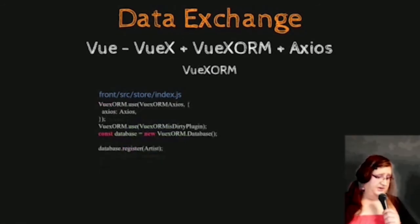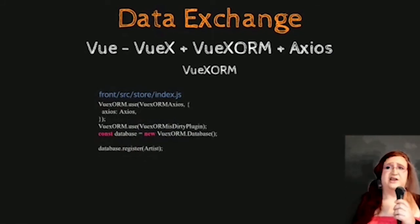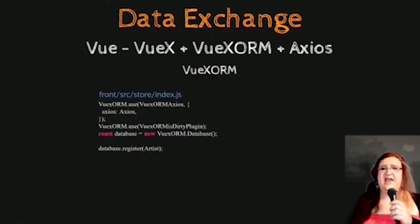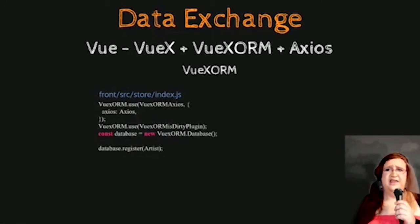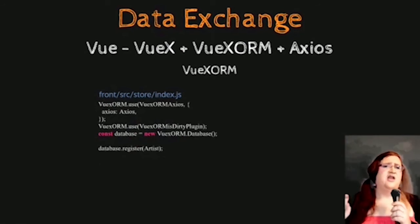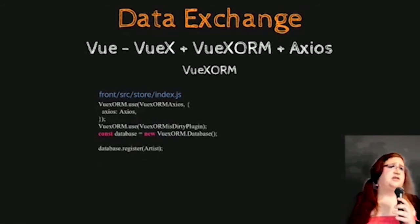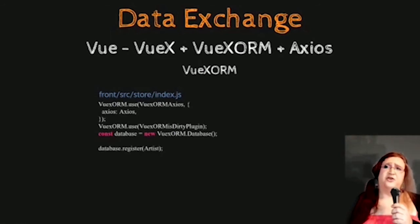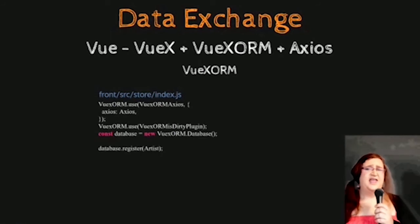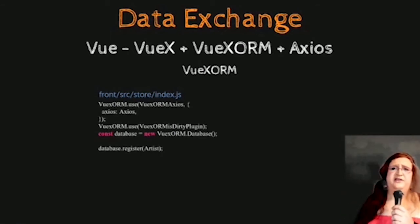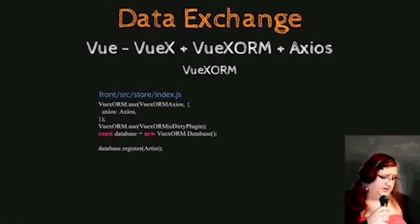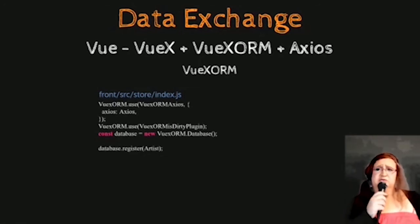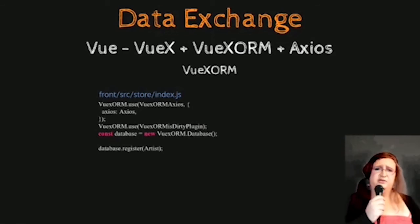Next to Axios, we'll be using Vuex ORM. Vuex ORM is an ORM like Django's ORM, except it stores data inside your browser's in-memory database. Every time you add data from the API, it creates basically a SQL database in memory in your browser. This is really useful — for example, if you've already loaded a bunch of artists and need to look up one in particular, you can first check in memory before making an API call. You can do requests like you would in SQL with WHERE statements. Here you can see how you register Vuex ORM by defining your models and registering them to the database.